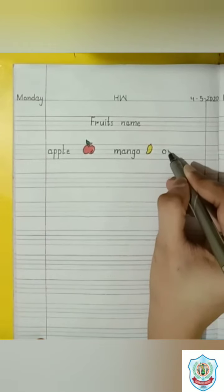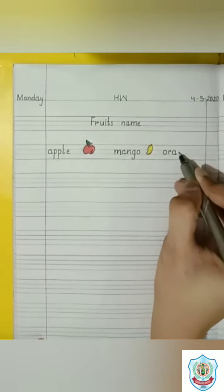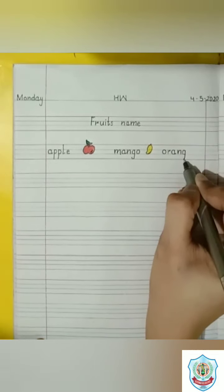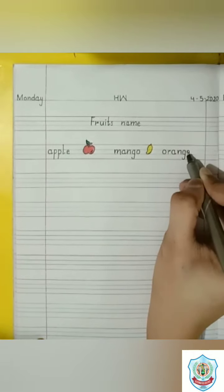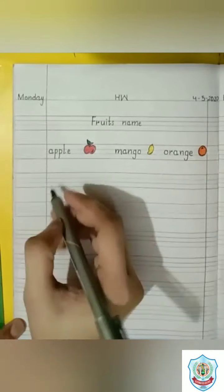Write here orange. O has a sound O. R has a sound R. A has a sound A. N has a sound N. And G, E makes a sound J. Orange. This is a picture of orange.